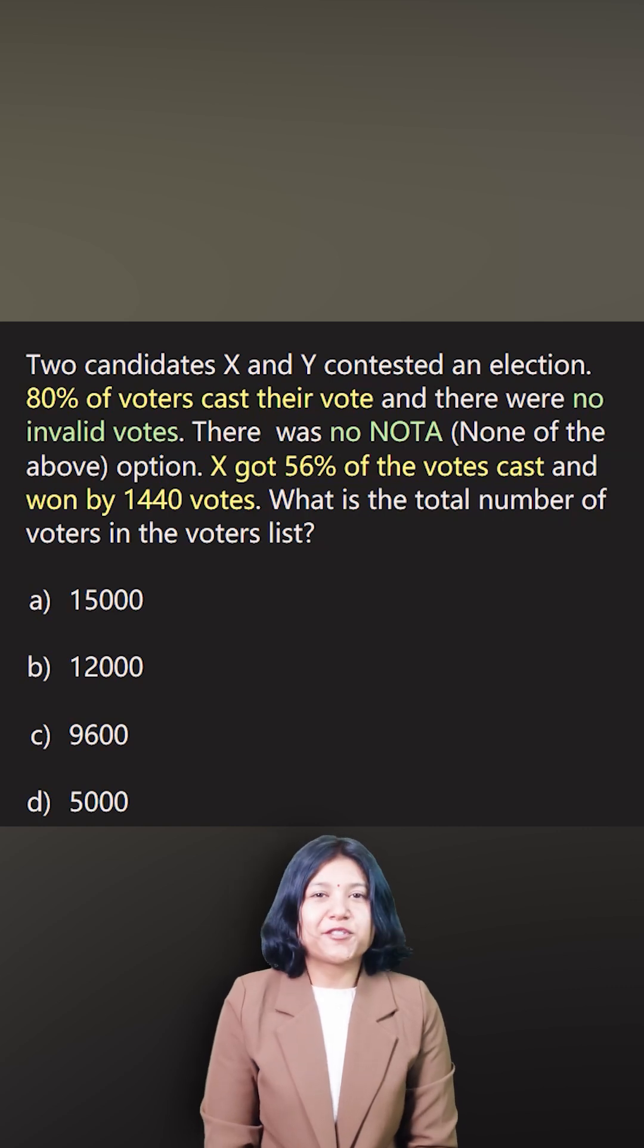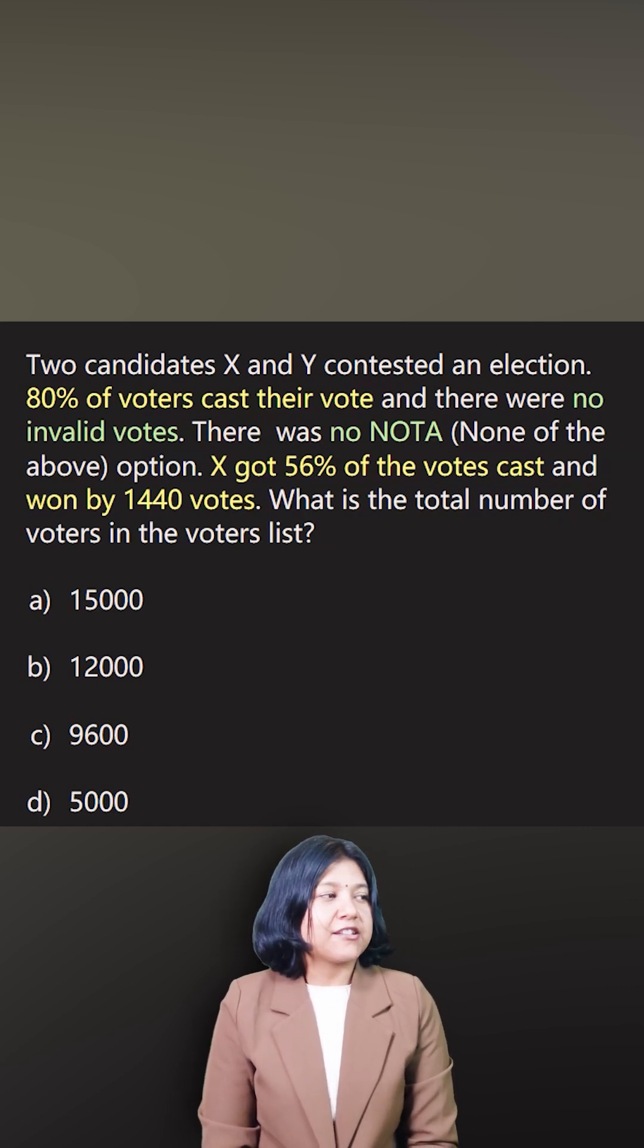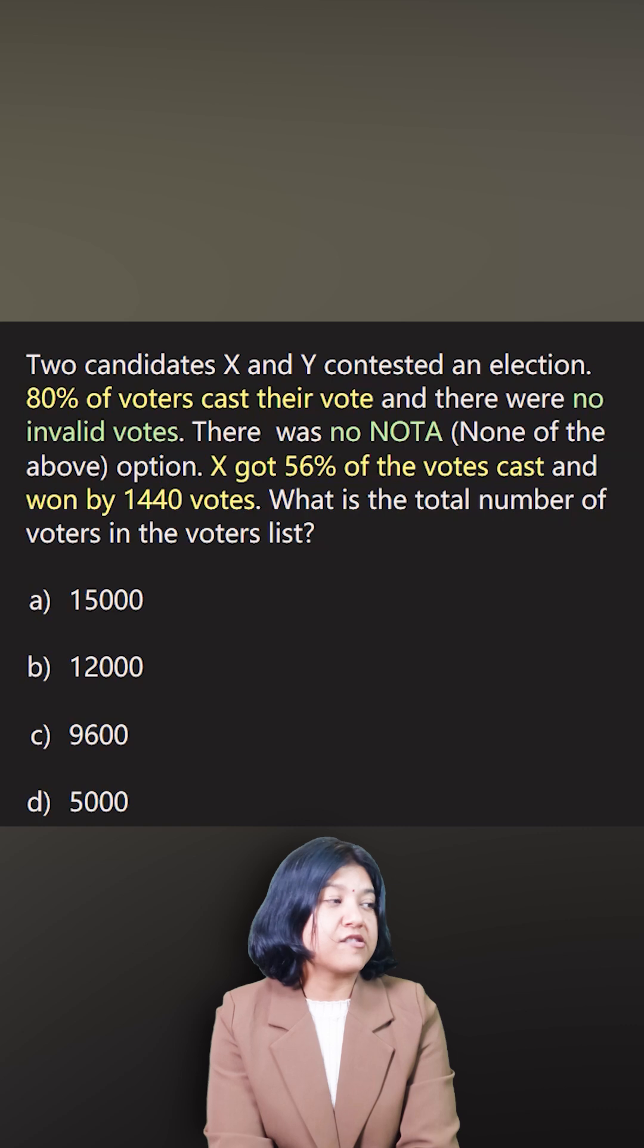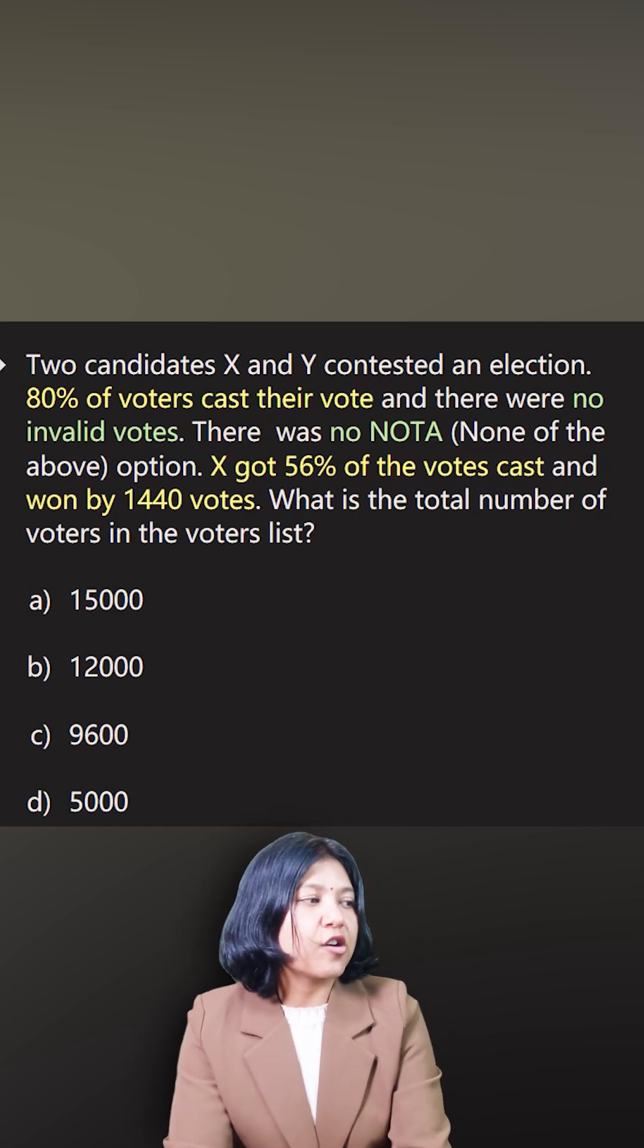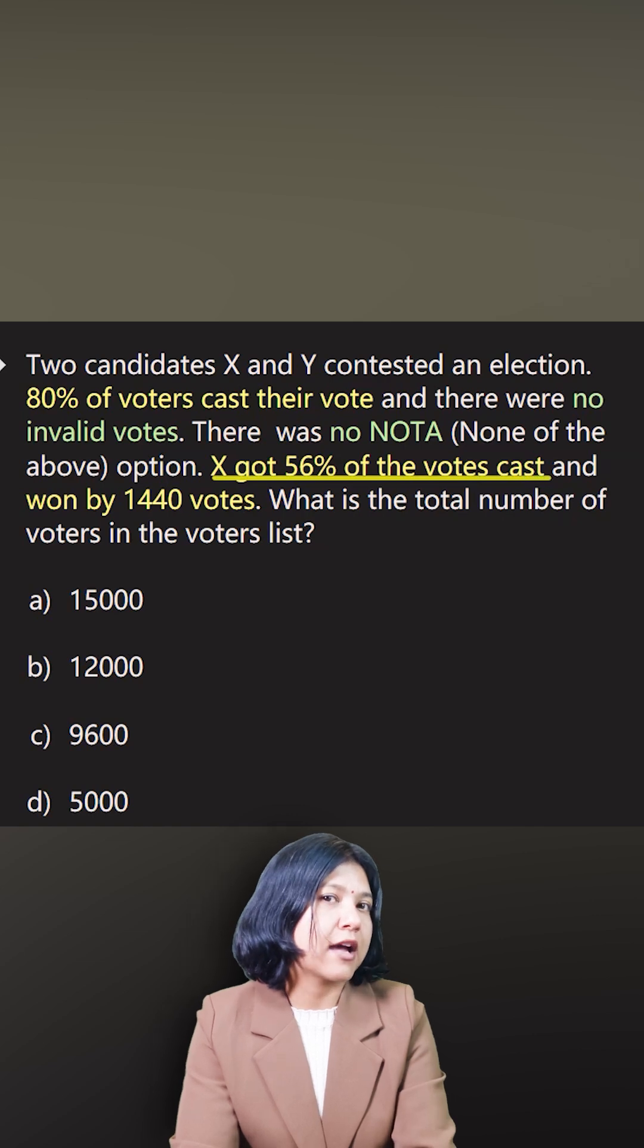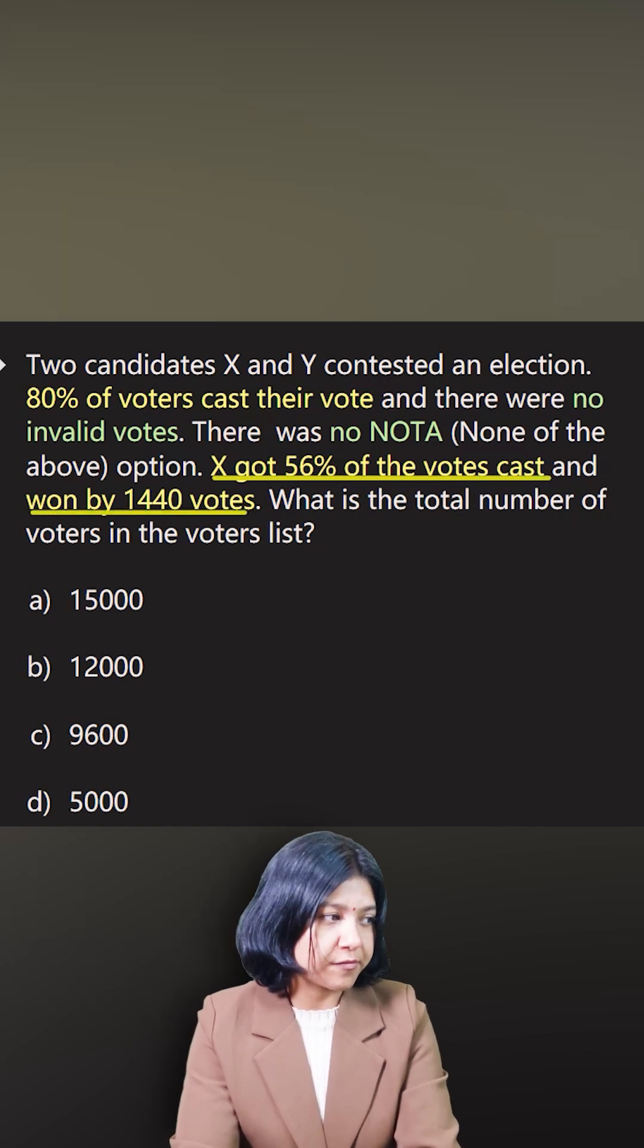This question is about an election. You have two candidates, X and Y, and 80% of voters cast their vote. There are no invalid votes and no NOTA (None of the Above) option, which means every vote is counted. X got 56% of the votes and won by 1440 votes - that is the main information.